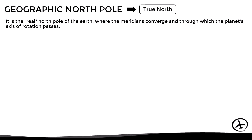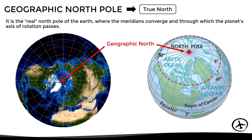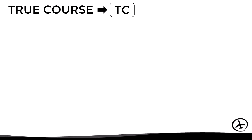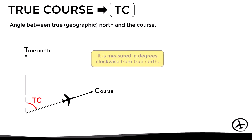True north is the real north pole of the earth where the meridians converge and through which the planet's axis of rotation passes. The course measured in relation to this true north is known as true course, often abbreviated as TC. It is defined as the angle between the true or geographic north and the course, and it is always measured in degrees clockwise from true north.